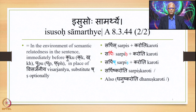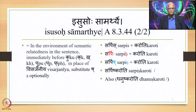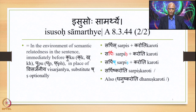So Isusos Samarthye has all its conditions fulfilled and it applies, substituting the Visarga in Sarpihi into Sh. Thus Sarpihi Karoti becomes Sarpish Karoti as the optional output. We also have Sarpihi Karoti as the other option. Similarly for Dhanush Karoti — either Dhanush Karoti or Dhanuhu Karoti.